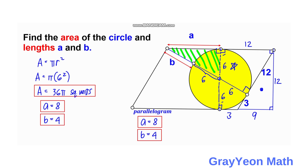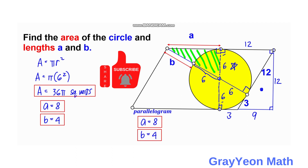To summarize: the area is equal to 36π square units, a is equal to 8 units, and b is equal to 4 units. Thank you for watching until the end of the video. Please like the video if you enjoyed our solution, and don't forget to subscribe to the channel and hit the bell icon so you'll be updated for more math videos.